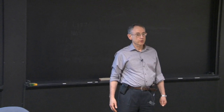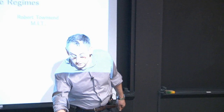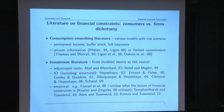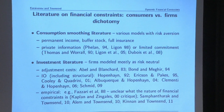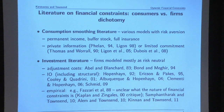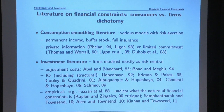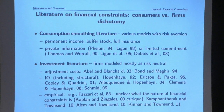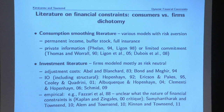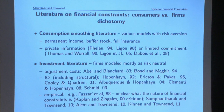The background is constraints. We've been talking about constraints all semester—the consumption smoothing literature, including not just full insurance but permanent income, buffer stock, and the standard incomplete markets literature. There's private information stuff mentioned in class from time to time, and limited commitment, which we've done quite a lot on—not just how it affects consumption but also in macro models. There's also a consumption literature and an investment literature covering adjustment costs, sensitivity of investment to cash flow, structural modeling, and reduced form empirical papers.